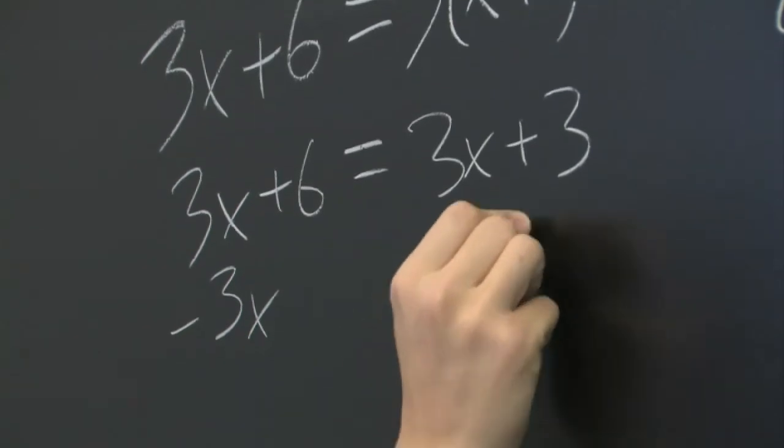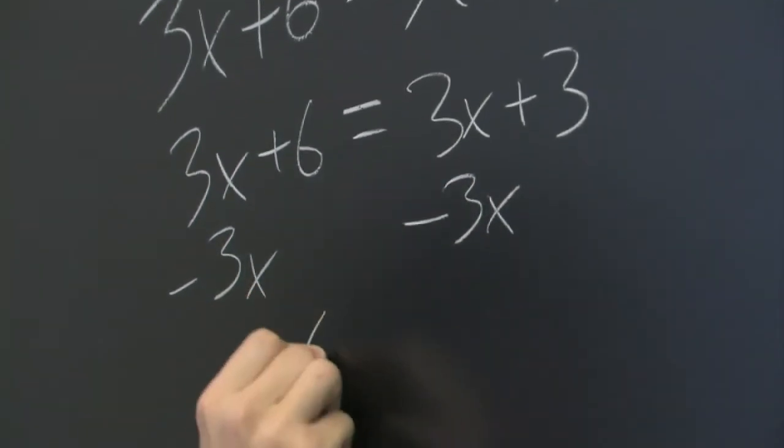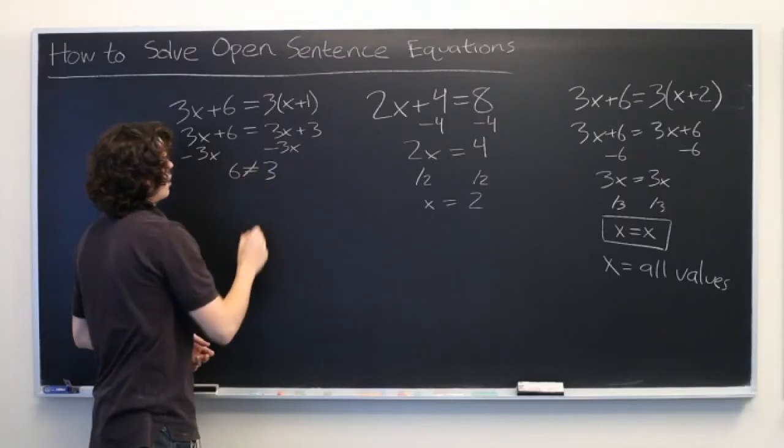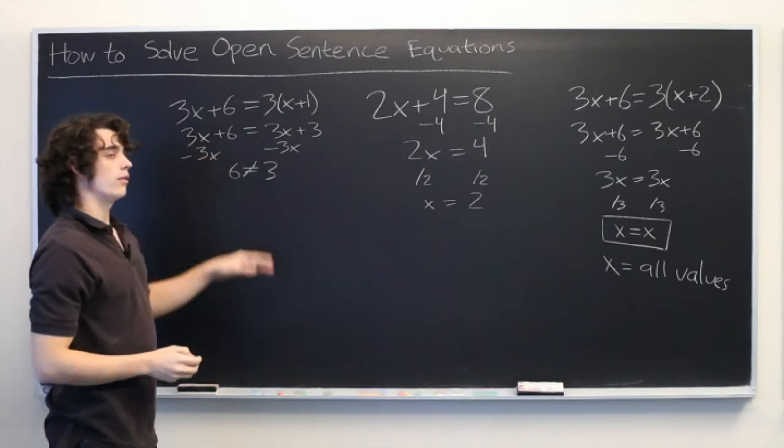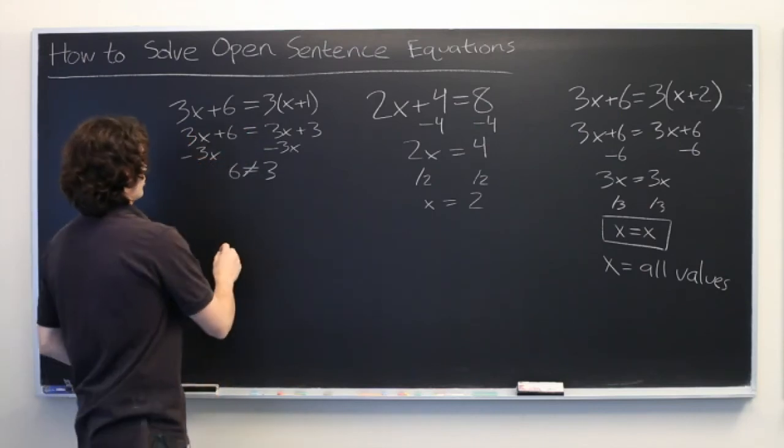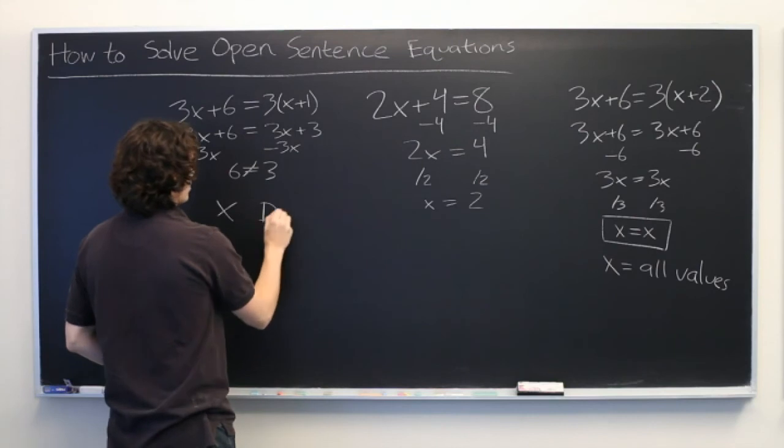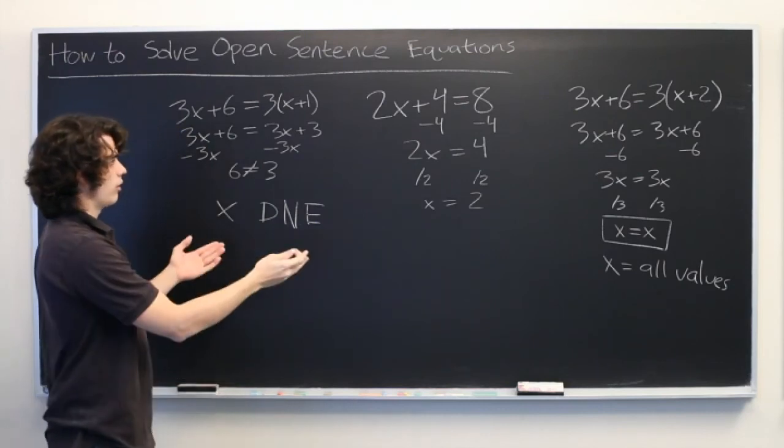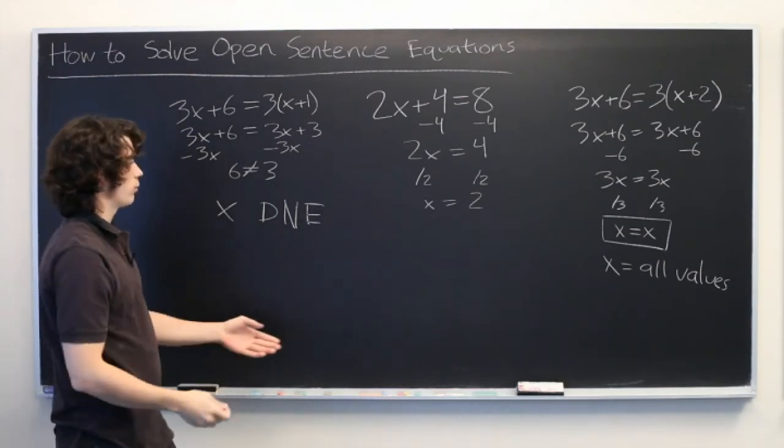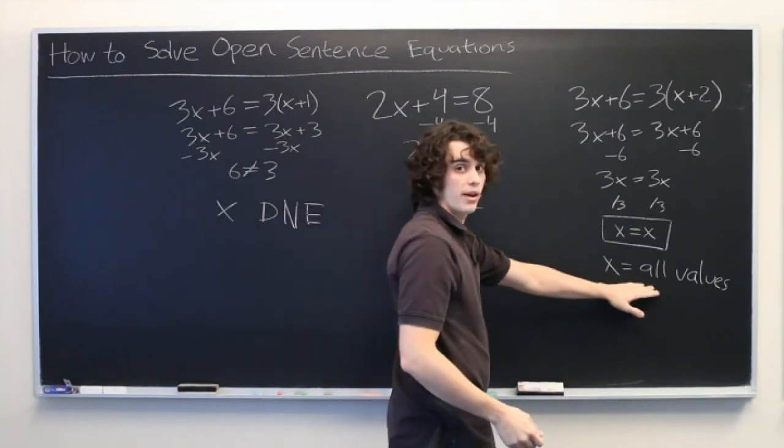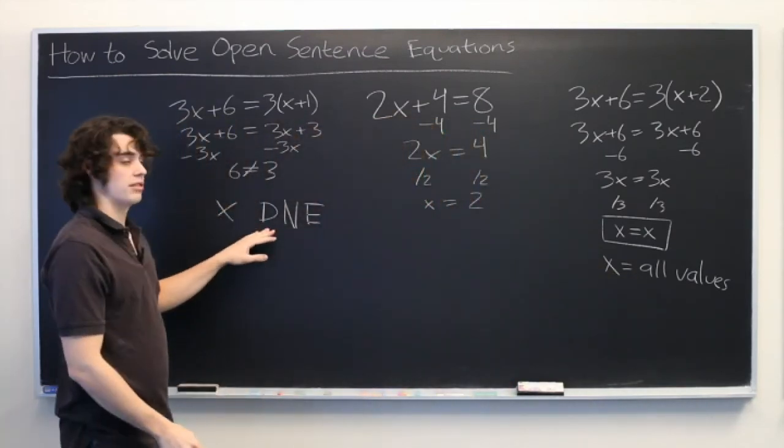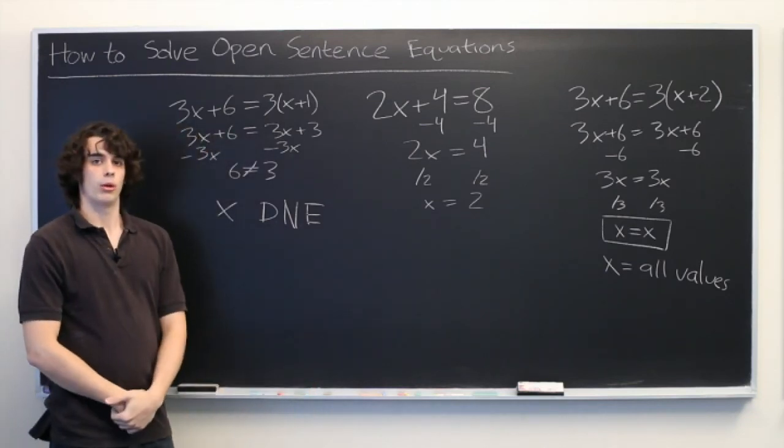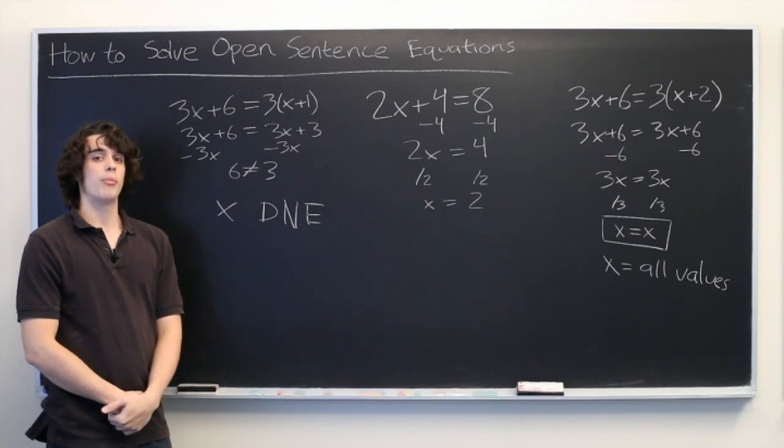Minus 3x, minus 3x. And what we're left with is 6 equals 3. But we know that this isn't true. So what this tells us is that there is no value of x for which there is a valid solution. x does not exist. And those are our only three options. We either find an explicit value, we find that x can be all values, or we find that x does not exist. And that's all there is to it. My name is Ryan Malloy, and we've just discussed how to solve open sentence equations.